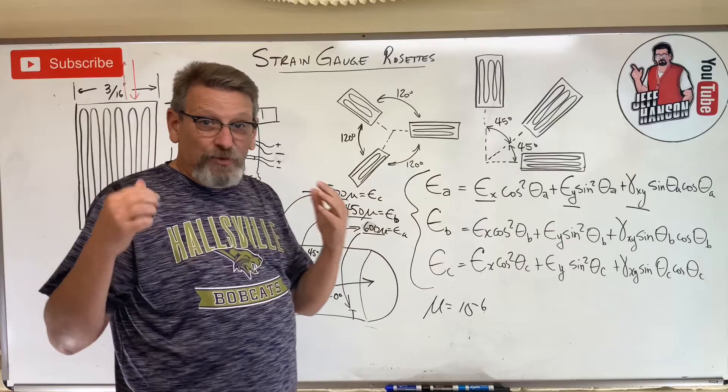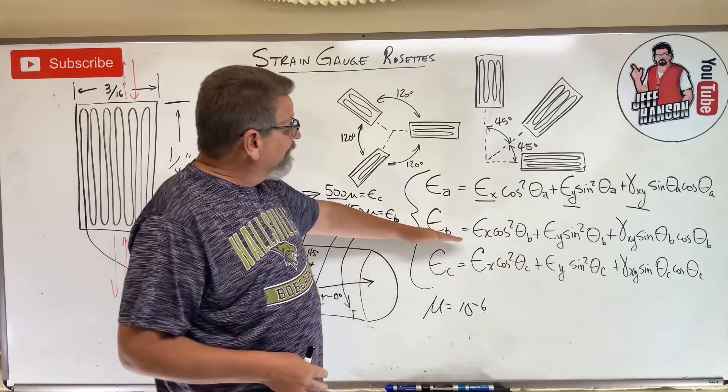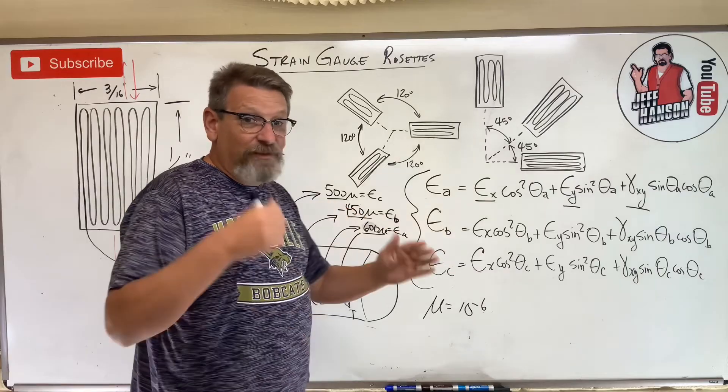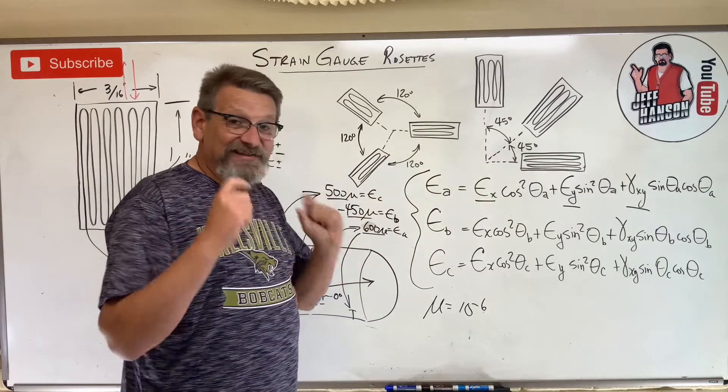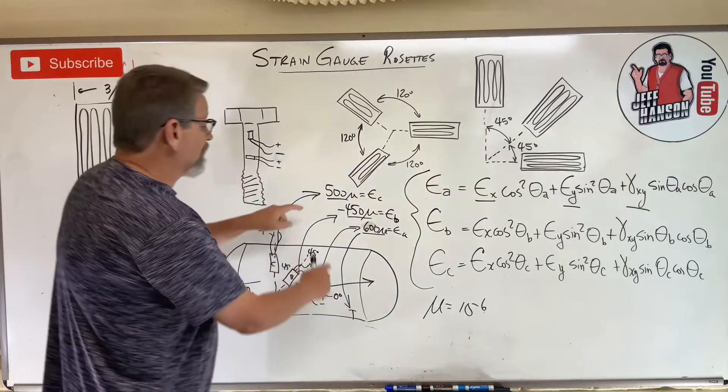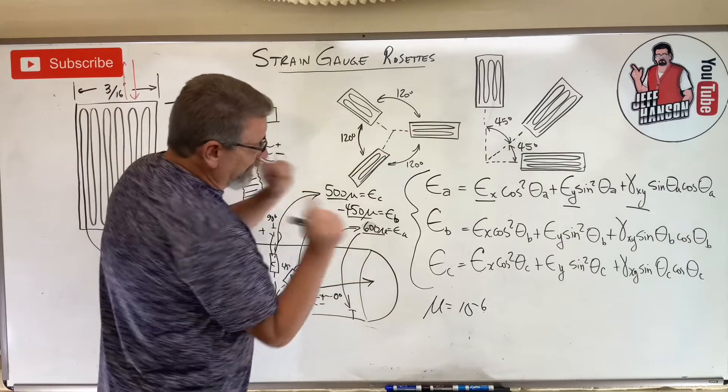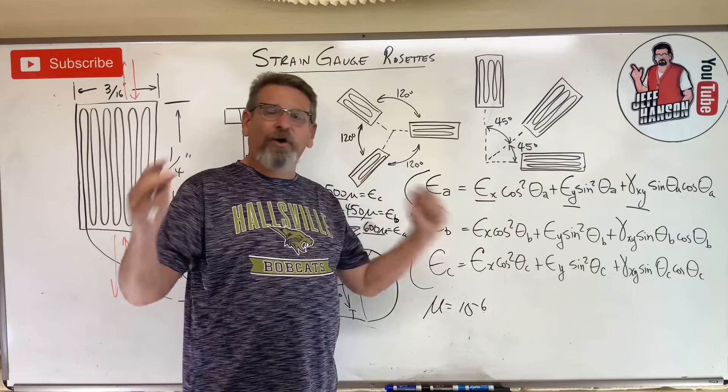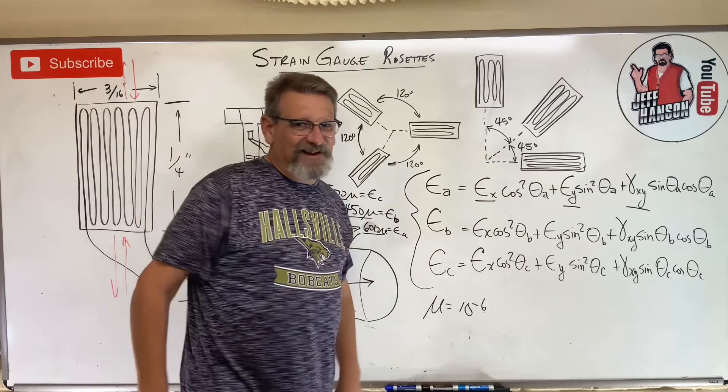So anyway, that's what a strain gauge is, that's what a strain gauge rosette is, and that is what the strain gauge rosette equations look like. In the next video, we're going to take an example problem. I'm going to give you some of this business here, we're going to plug it in there, we're going to draw Mohr's circle, we're going to transform it. Hold on to your hat. See you next time.